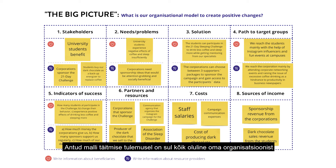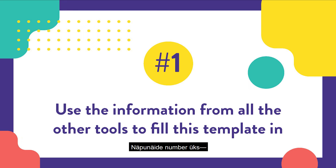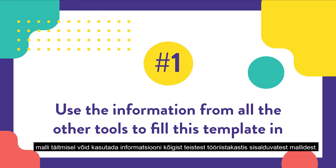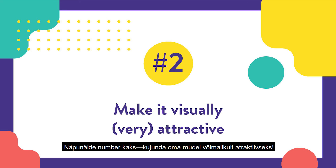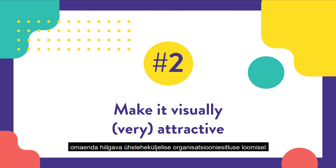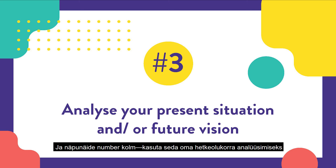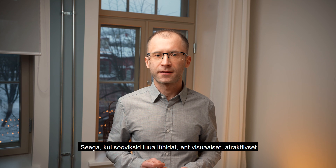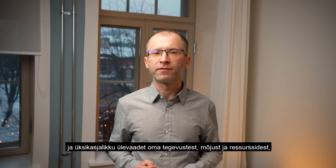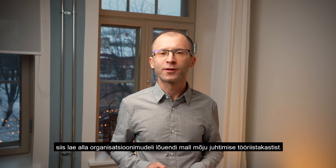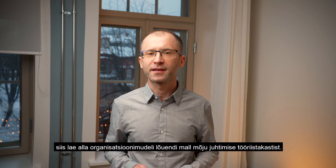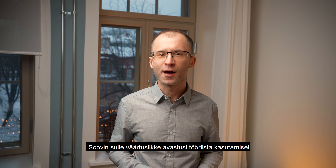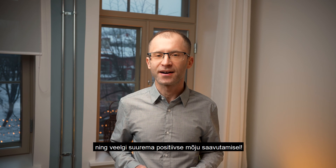As a result of filling in the template, you have gathered everything important about your organization on one page. Now the top three tips and tricks. Tip number one: when filling in the template, you can use information from all the other templates in this toolbox. Tip number two: make it as attractive as you can — the current design is just a starting point to create a magnificent one-pager. Tip number three: use it to analyze your current situation or as a vision board for the future — the template works both ways. Download the Organisational Model Canvas template from the Impact Management Toolbox, and I wish you valuable discoveries and even greater positive impact. Have a great day.